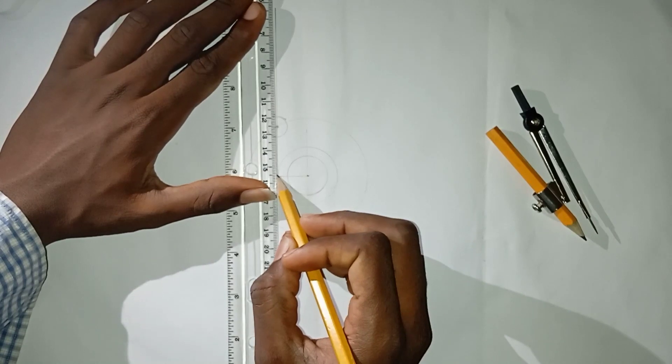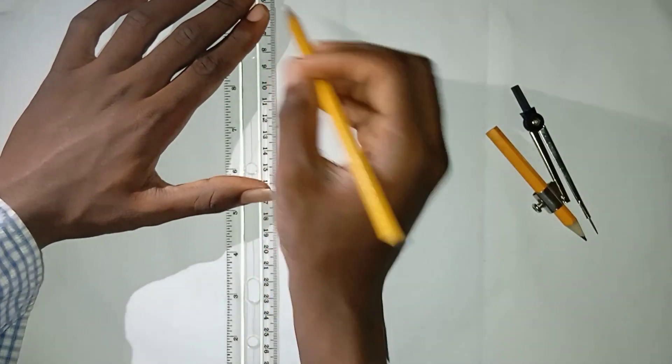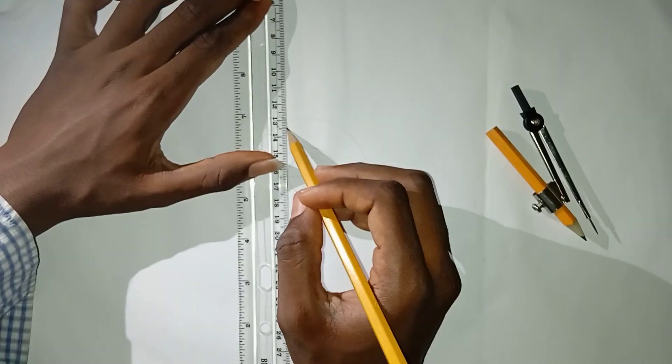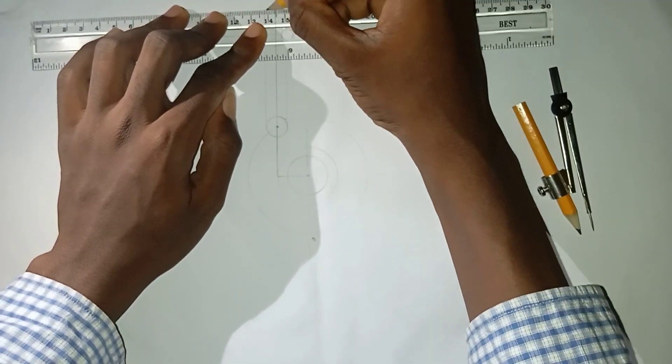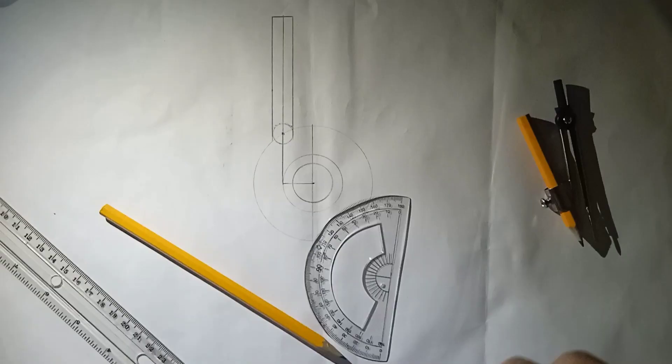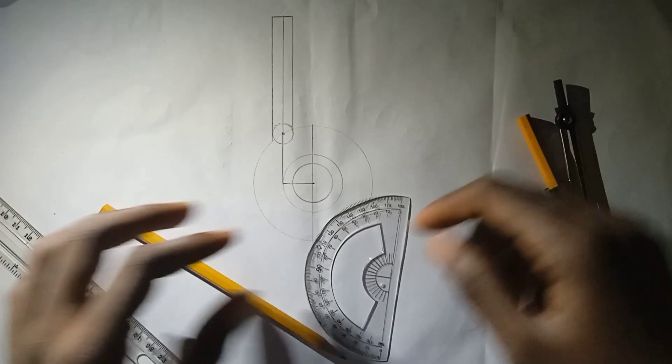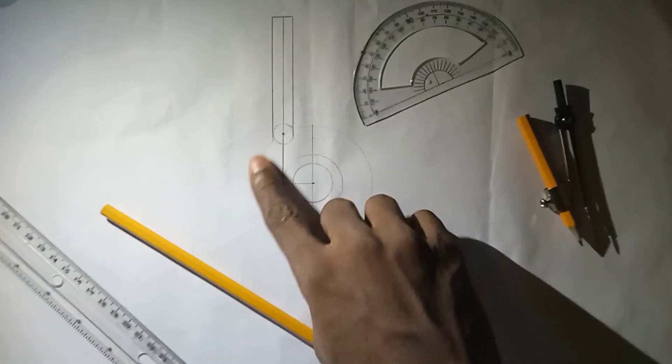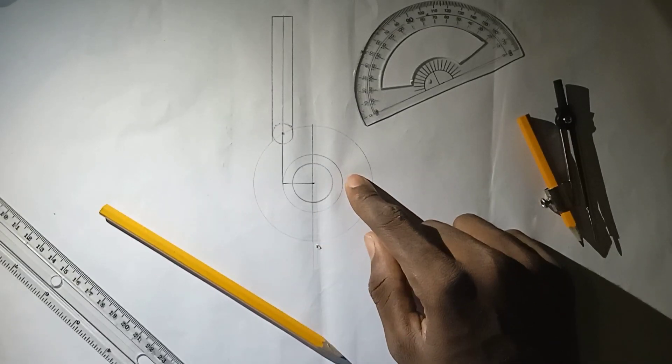From here I'll just bring it up. So having done this I'm going to divide this my base circle into 12 equal parts.